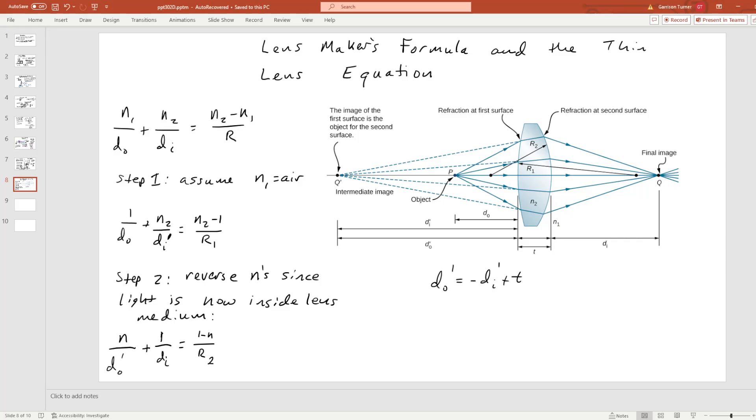We now come to the lens makers formula and the thin lens equation and how to derive them. So in the previous video we derived this general result for curved surfaces with lenses. And remember D_O is your object distance, and D_I is your image distance.